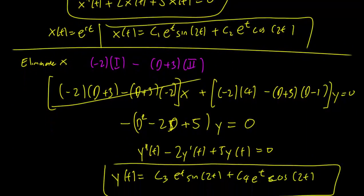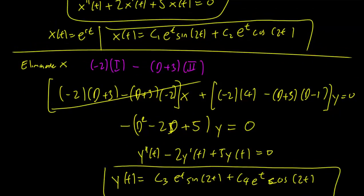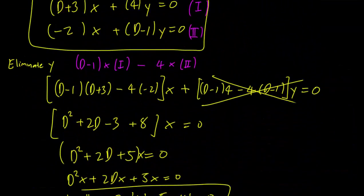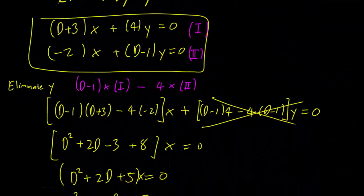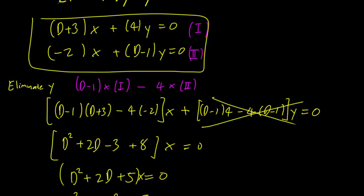I will note one thing. The astute student would have noticed that we got the same equation for x and y using this method. And this will always be true if your equation is homogeneous. That is, if you have a 0 on the right hand side for both equations. You always get the same equation for x and for y.